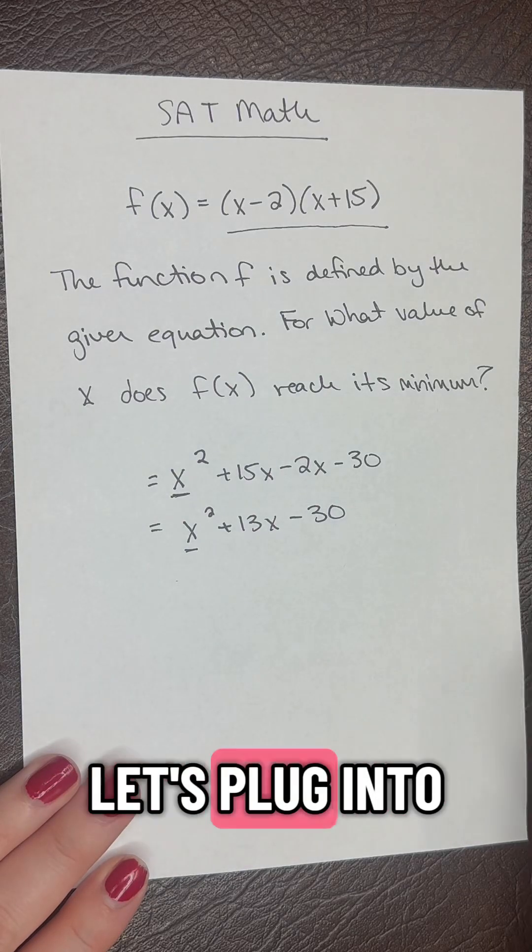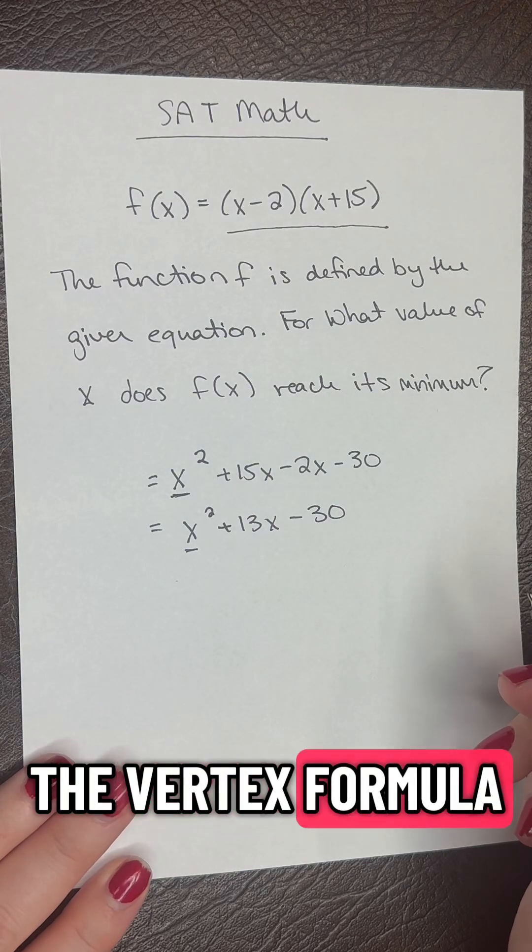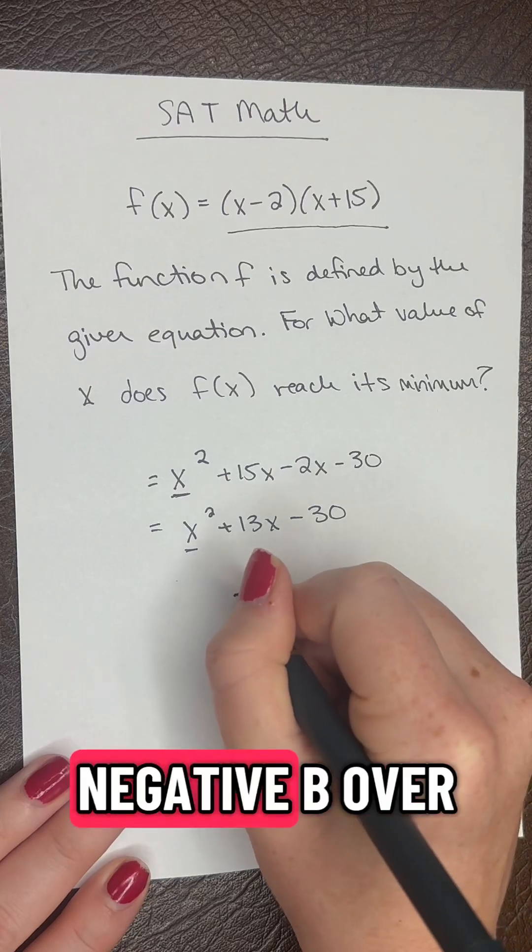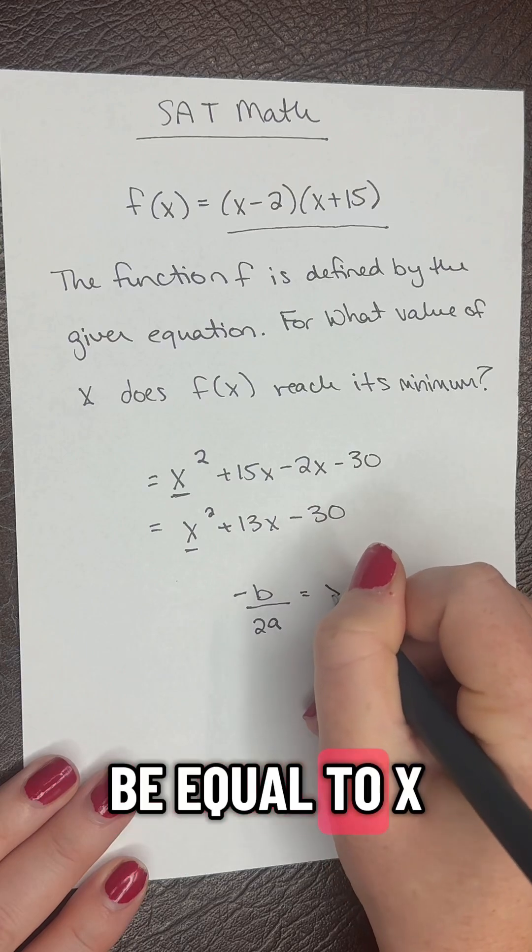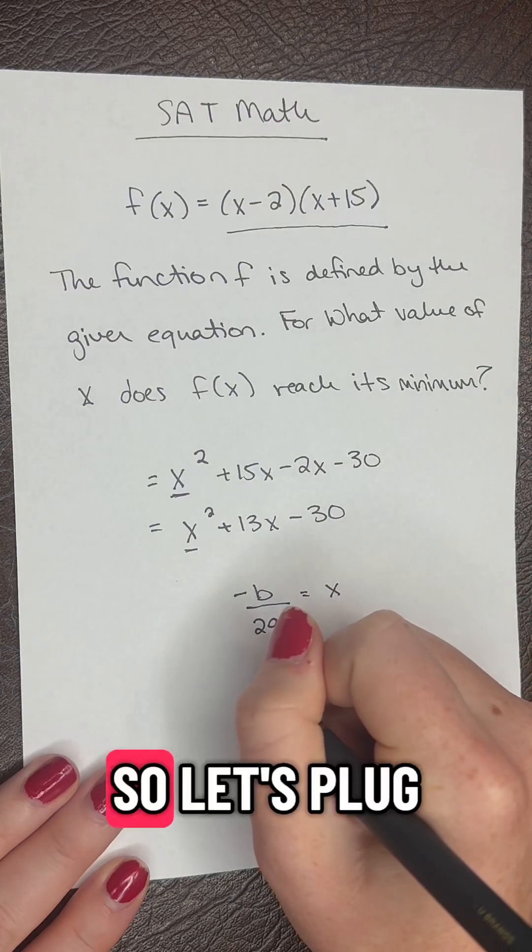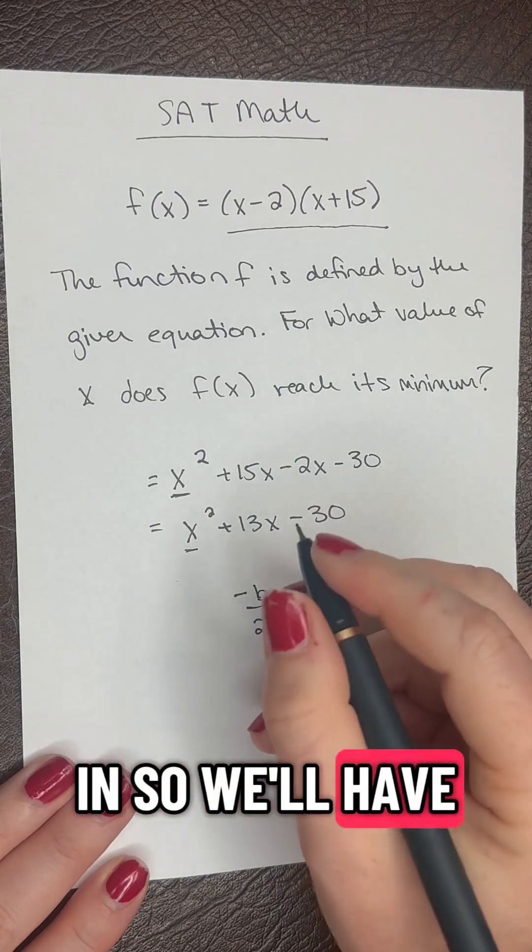Now let's plug into the vertex formula. We have negative b over 2a equals x. Let's plug in.